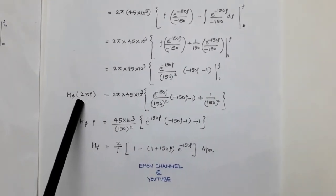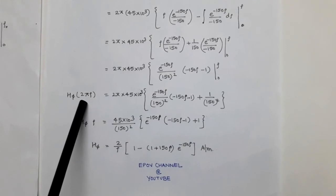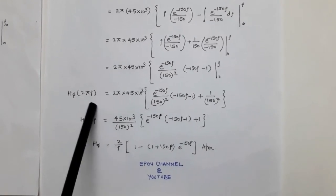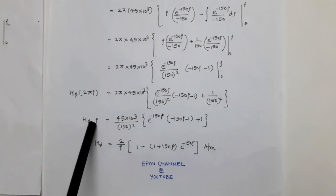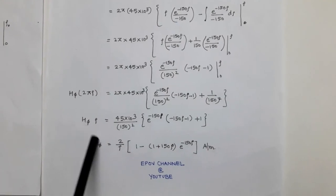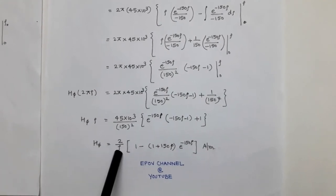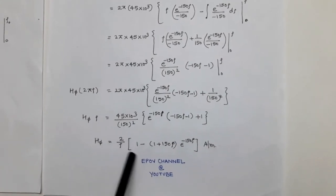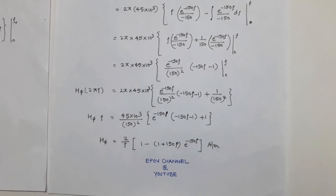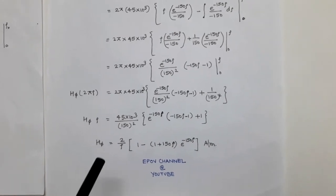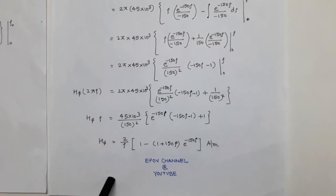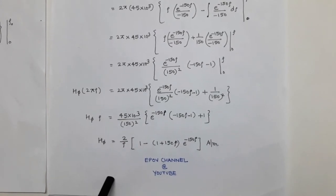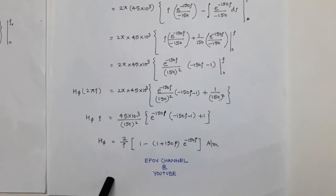On the left side we get H_φ × 2πρ; the 2π cancels, giving H_φ × ρ. Moving ρ to the right side, the result is H_φ = (2/ρ) × [1 − (1 + 150ρ)e^(−150ρ)] amperes per meter.